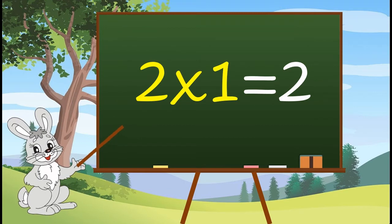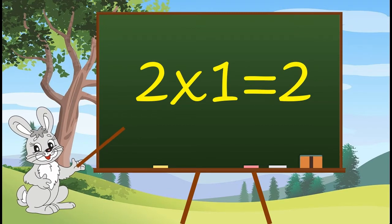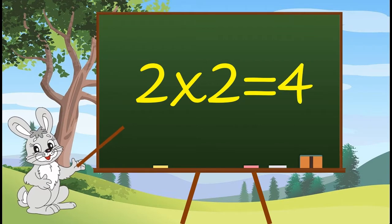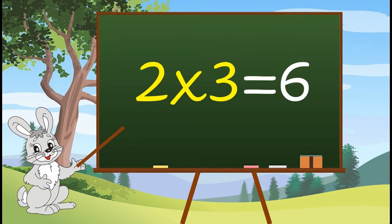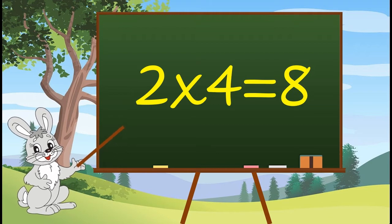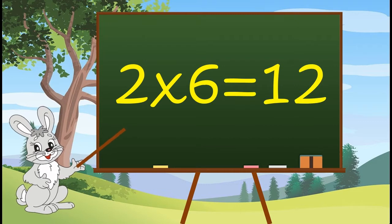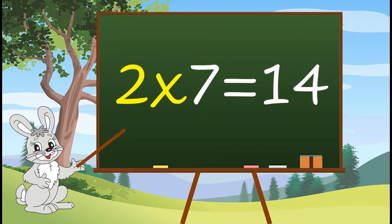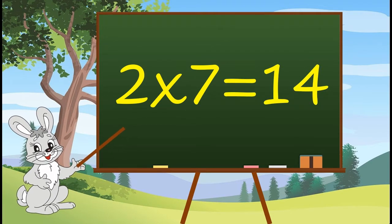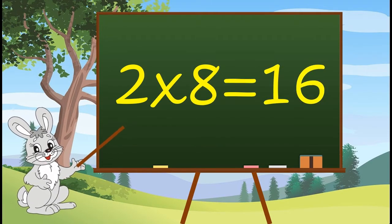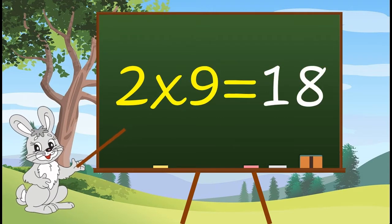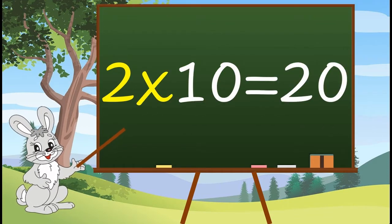2 1s are 2, 2 2s are 4, 2 3s are 6, 2 4s are 8, 2 5s are 10, 2 6s are 12, 2 7s are 14, 2 8s are 16, 2 9s are 18, 2 10s are 20.